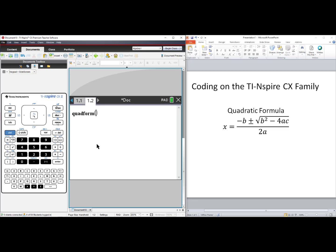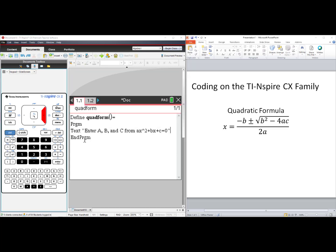You'll see your code, Quad Form, and when you press Enter you see the text box: Enter A, B, and C from Ax² plus Bx plus C equals 0. Press Enter and it says Done. To go back to the previous page where your code is located, press Ctrl-Left Arrow. Get to the end of the line and press Enter to open a new line.